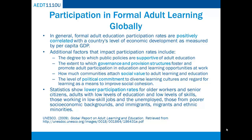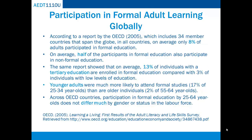According to an OECD report covering 35 member countries, on average only 8% of adults participated in formal education. Countries with larger numbers of adults enrolled in formal education include Australia, Belgium, New Zealand, Sweden, and the United Kingdom. On average, half of participants in formal adult education also participate in non-formal education. The report showed that on average 13% of individuals with a tertiary education are enrolled in formal adult education, compared with 3% of individuals with low levels of education. Younger adults were much more likely to attend formal studies — 17% of 25 to 34 year olds — compared to only 2% of 55 to 64 year olds.